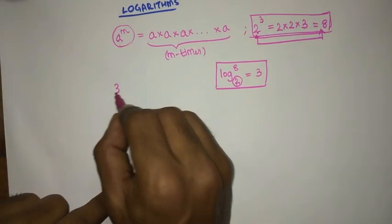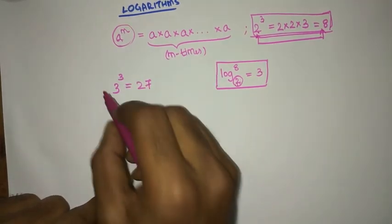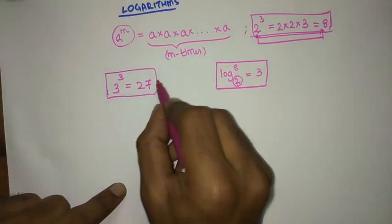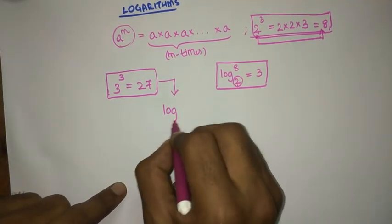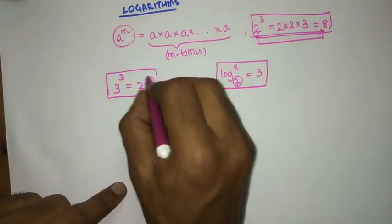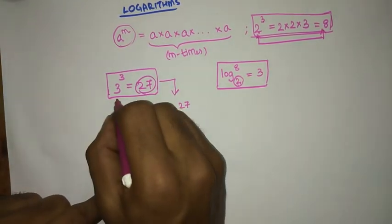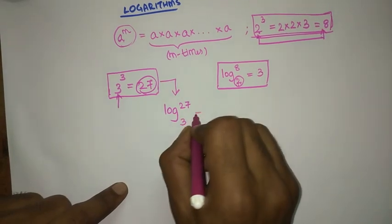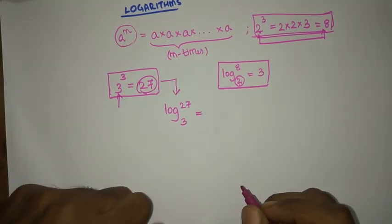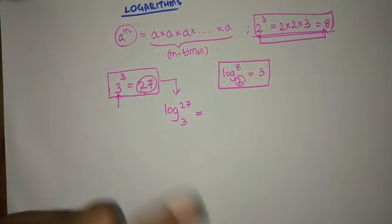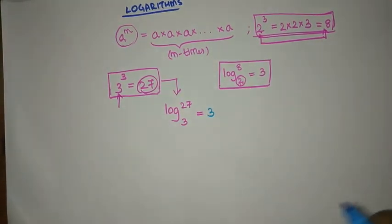So if there is a number 3 power 3 is equal to 27 — this is in exponents and powers — the same meaning in logarithms is: log 27 to the base 3. The answer is you need to multiply 3, 3 times to get 27.